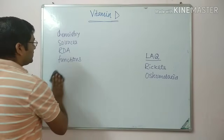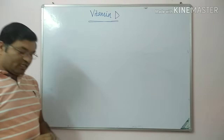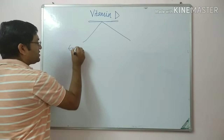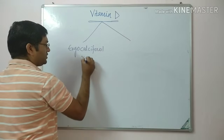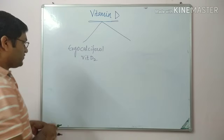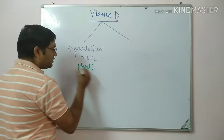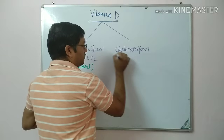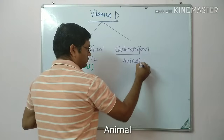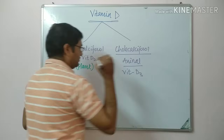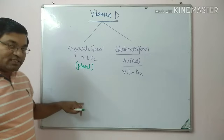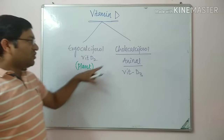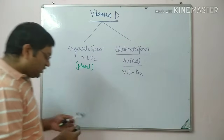Coming to the chemistry part, there are two main forms of vitamin D. The first one is ergocalciferol, which is vitamin D2, found in plant sources and synthesized from ergosterol. The second is cholecalciferol, found in animal sources, known as vitamin D3. The active form, calcitriol, is synthesized from ergocalciferol or cholecalciferol.